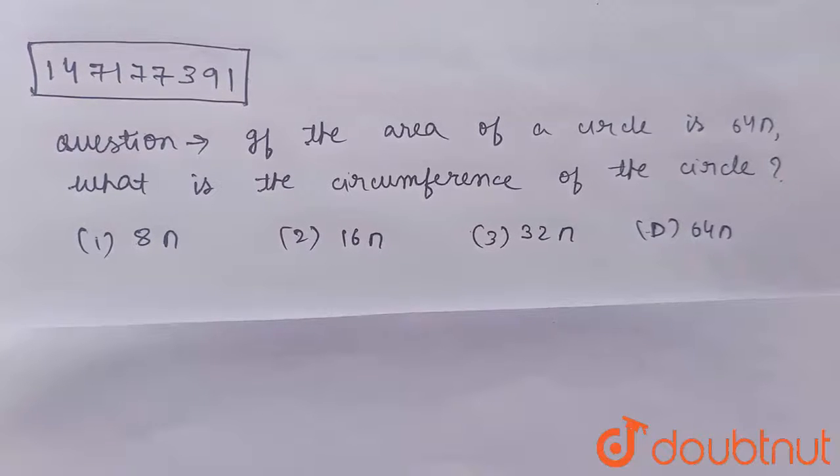The question is: if the area of a circle is 64π, then what is the circumference of the circle? Now, for finding the circumference of a circle, what is the basic thing that we need?